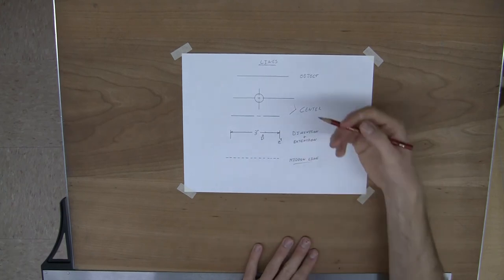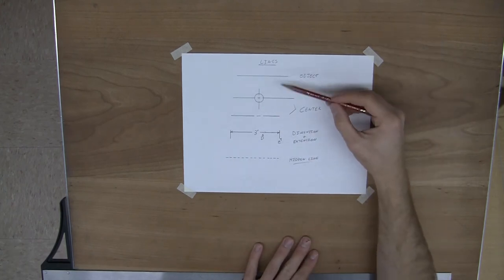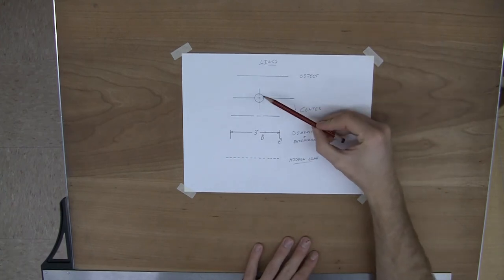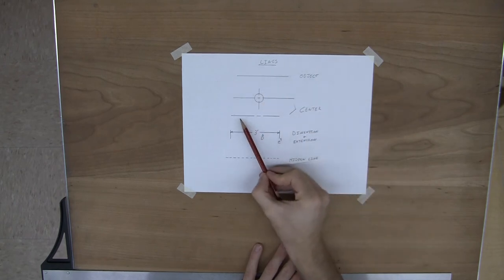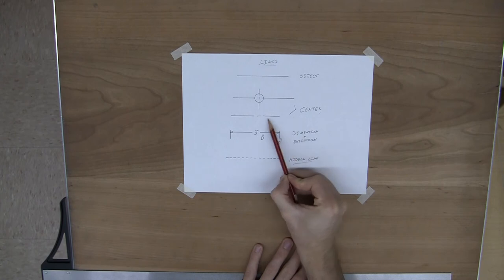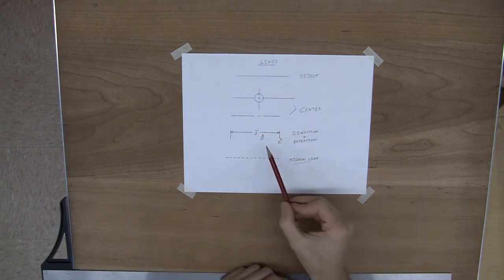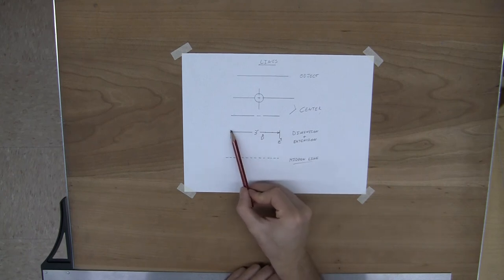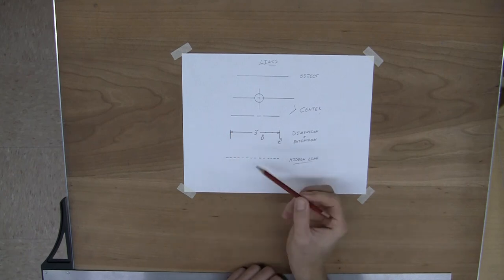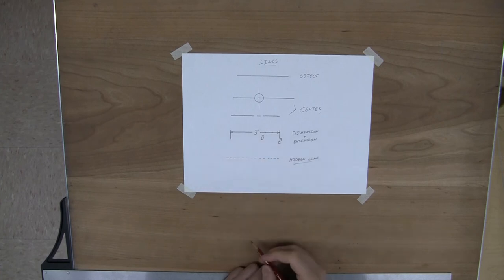So these are the type of lines. Objects to show the edge of something that's visible. The center lines, I drew two in tandem here, and then one just by itself. So you can see it's a solid line, little break, solid line. And this is the center. Dimension and extension lines always go together. Dimension lines run up to the extension line. The extension line then runs down to the object. And then the hidden line is the one that we're introducing today.